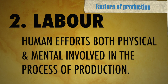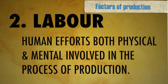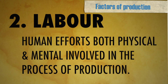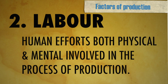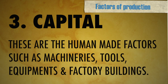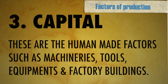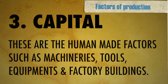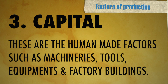Next is labor. Labor is human effort, both physical and mental, involved in the production of goods and services. When we produce things, we need both physical as well as mental labor. Labor is also an important part of the factors of production. Next we have capital. Capital in economics refers to human-made factors such as machineries, tools, equipment, and factory buildings. This capital will help us to further produce goods and services.